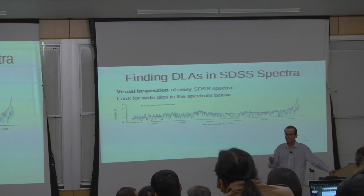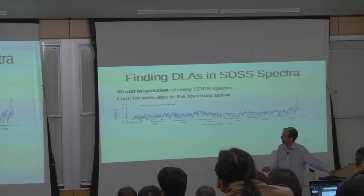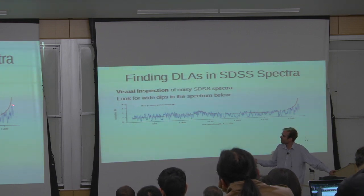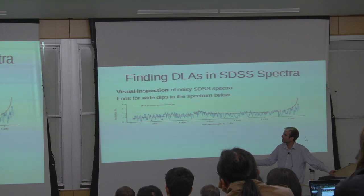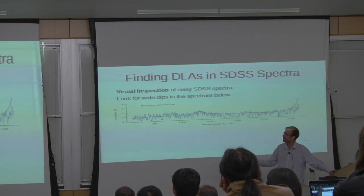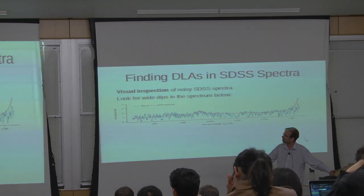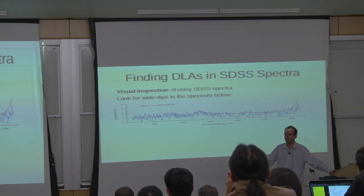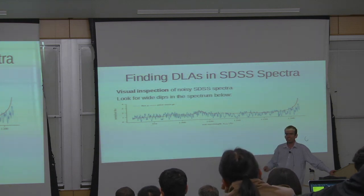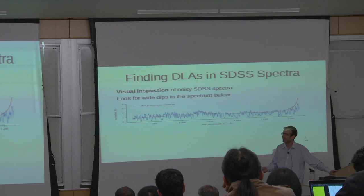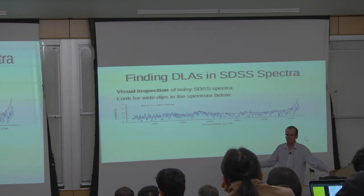So what are we doing here? This is the state of the art for finding things in quasar spectra. You take a spectrum — it's kind of noisy and you're looking for a feature in it. I have made it easier by putting a red line, which is a guess at what the spectrum would look like if there was no noise and no absorption. Every single one of you, even the people who do condensed matter, are going to look at this and figure out where the absorption was.